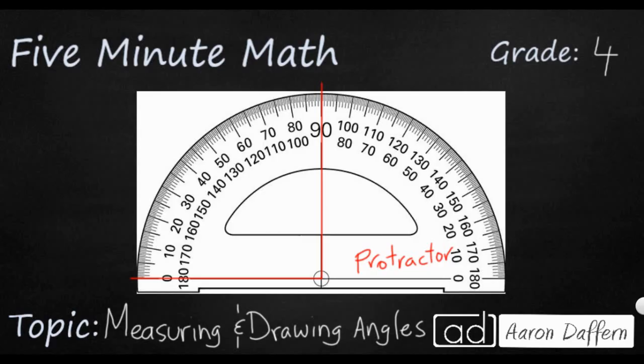This protractor shows us degrees, and I've got a very basic angle here. This is what we call a right angle or a square angle, 90 degrees. If you were to measure it on a protractor, one line would be on the zero and the other line would be on the 90.